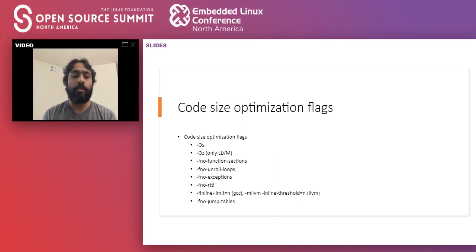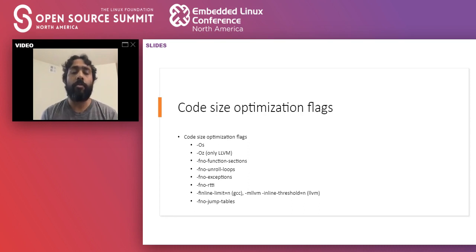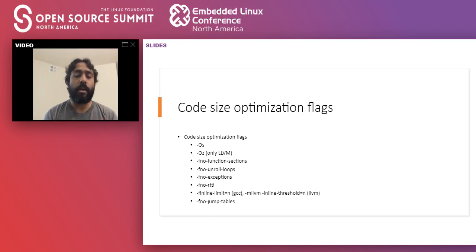The fourth flag is -fno-unroll-loops. Loop unrolling is a well-known optimization that increases code size but improves performance on many workloads. Since we're targeting code size, we don't want many loops unrolled — adding -fno-unroll-loops prevents the compiler from unrolling any loop. However, if your application has performance-critical components like DSP or camera algorithms, careful analysis is required since those parts still need to be fast.